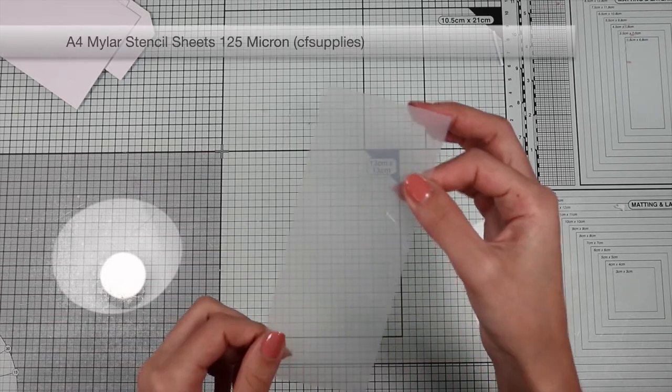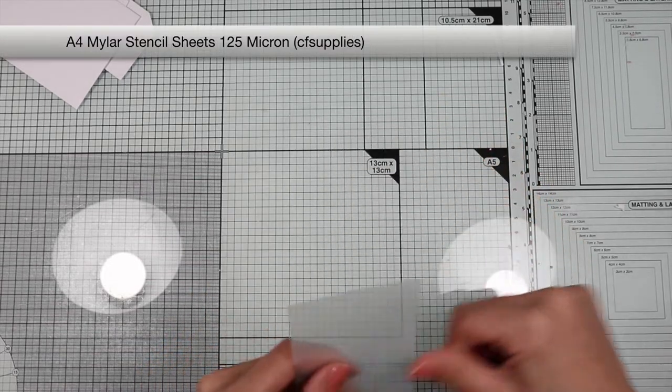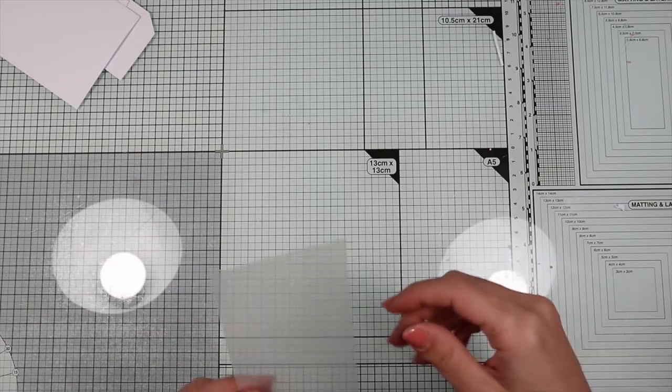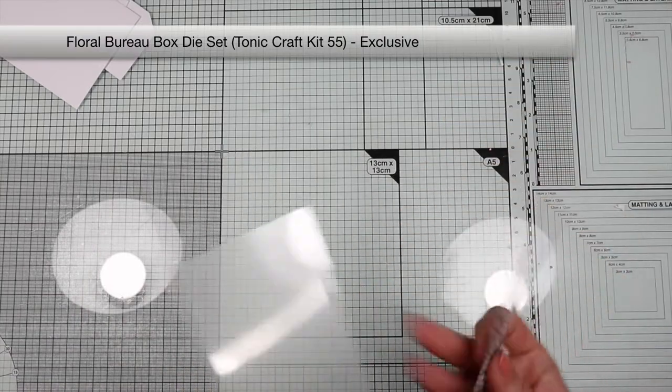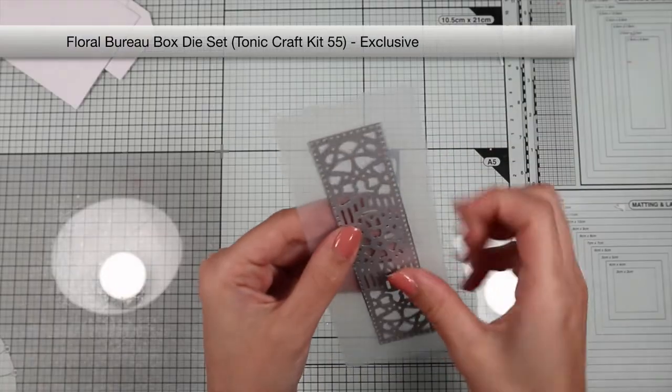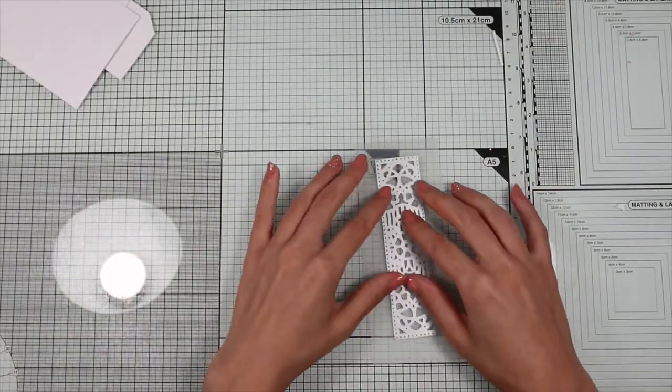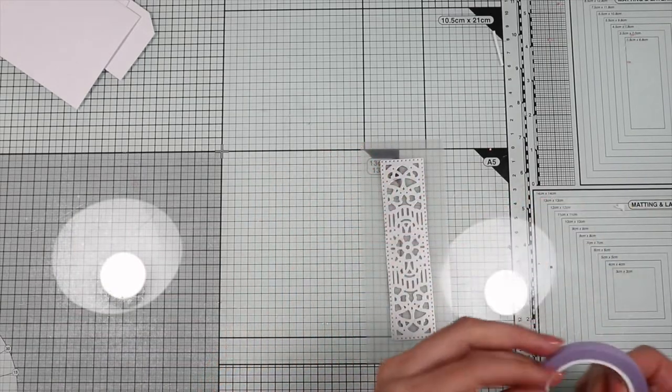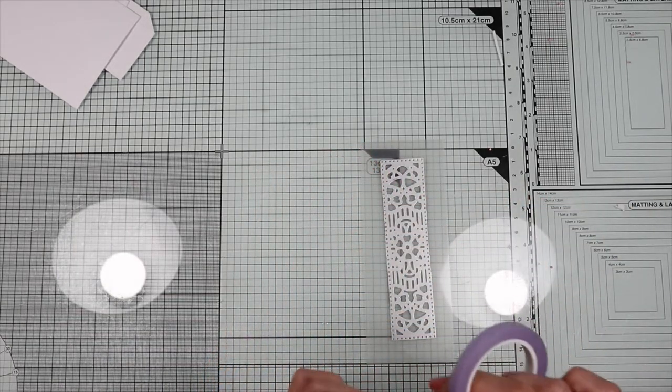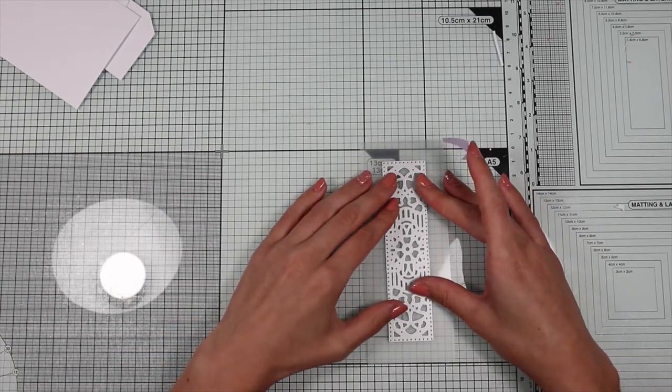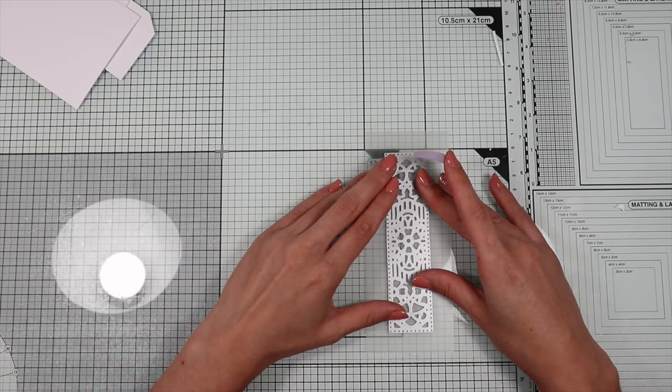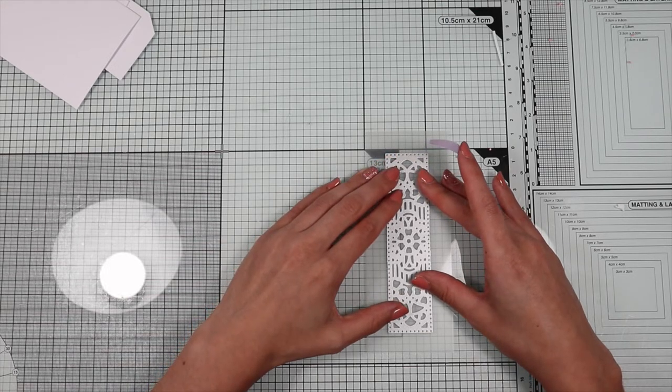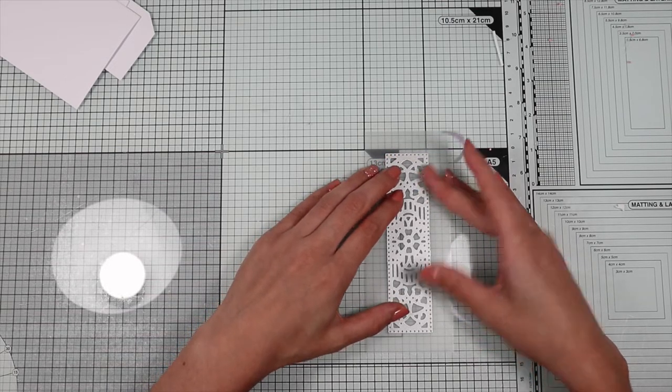As I've already said at the beginning, today we're going to see another idea on how to use our dies. In fact, with them we can create stencils. To create my stencil, I'm going to use this special sheet called Mylar. If you don't have this type of sheet, you can make your stencils with cardstock, or for something that is washable and more durable, you could use regular acetate sheet.